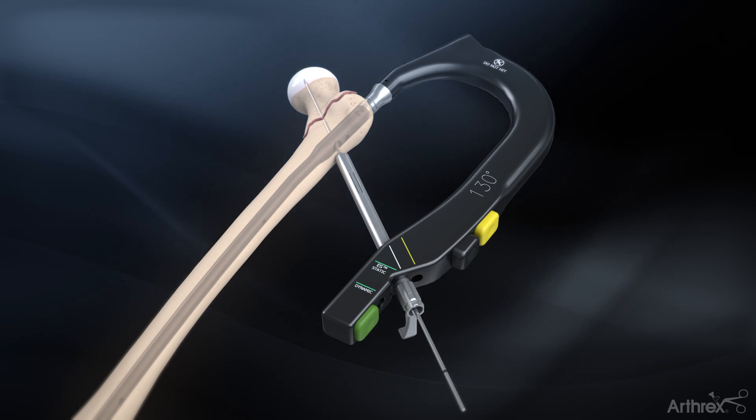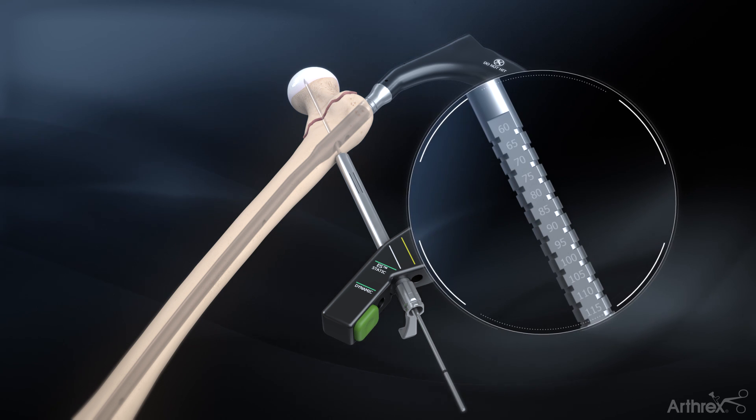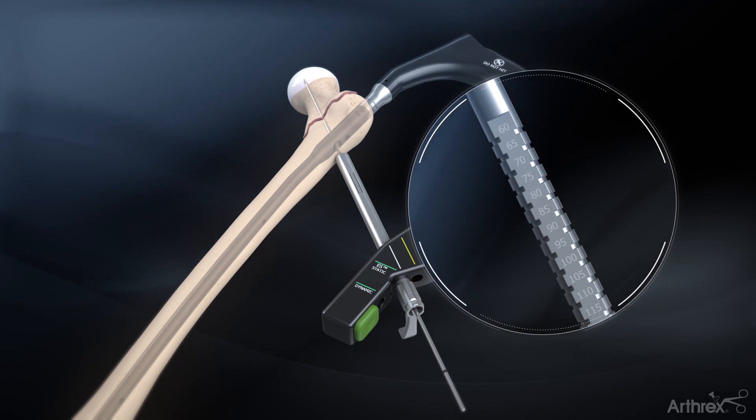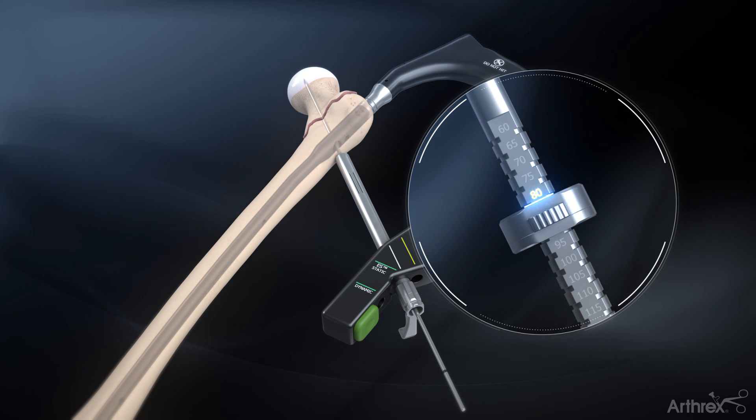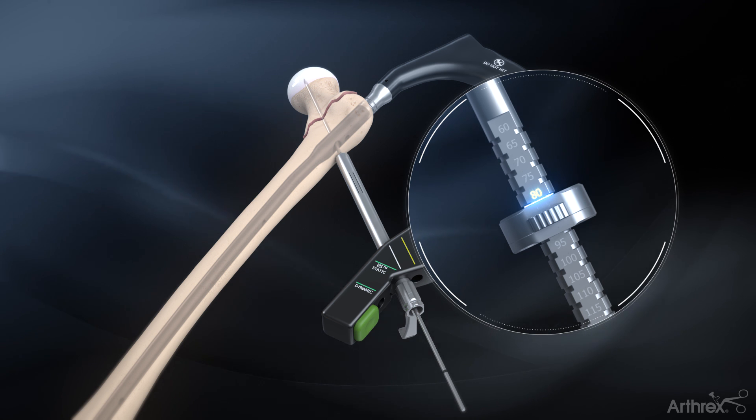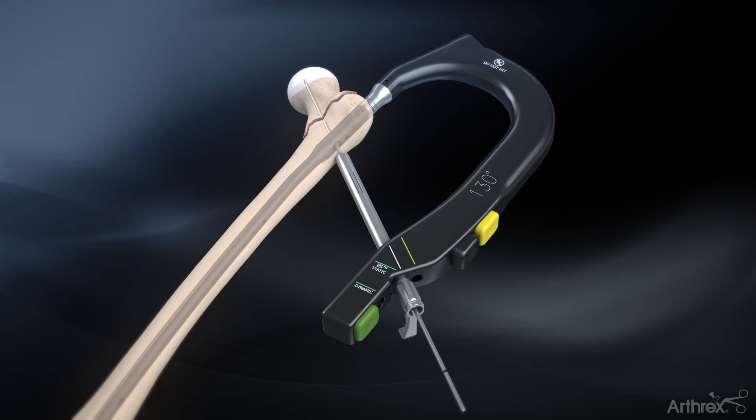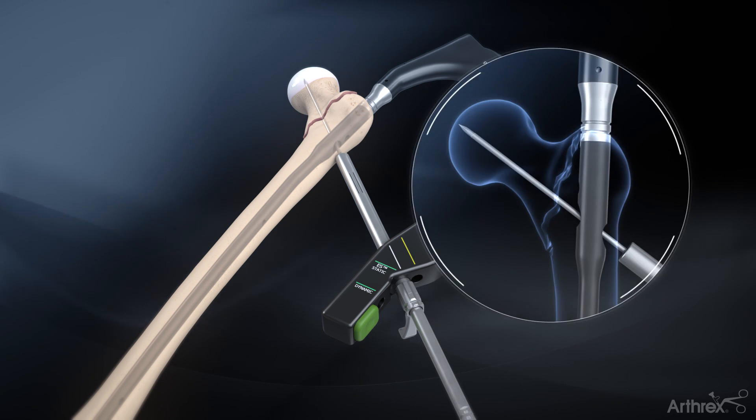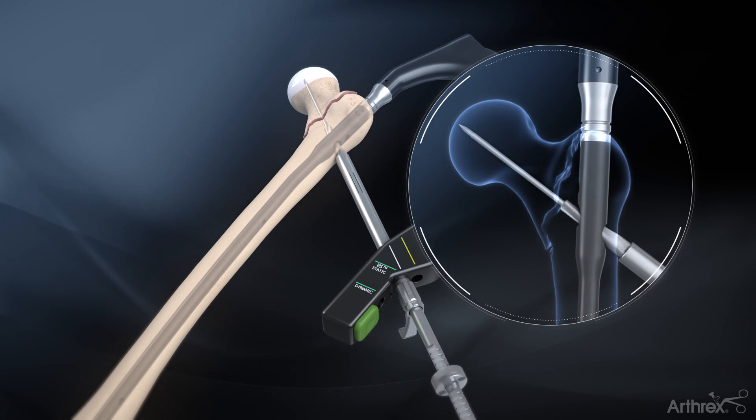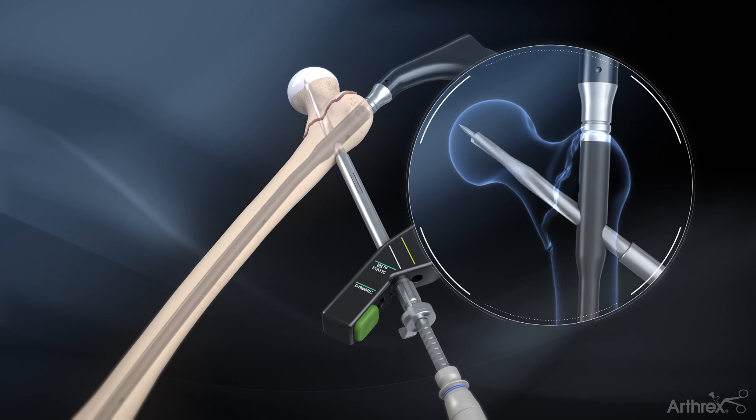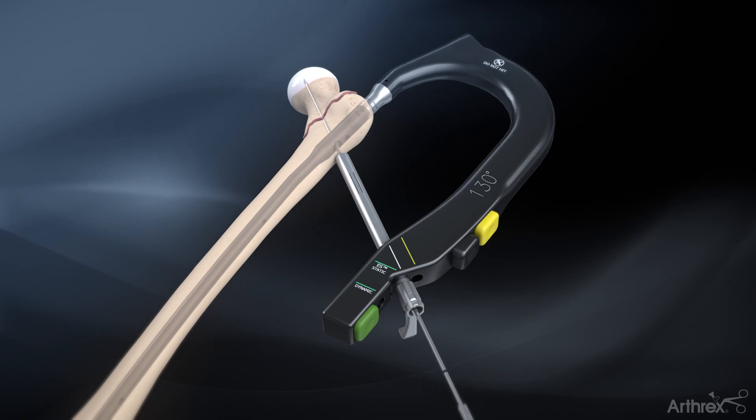Remove the 3.2 mm pin guide. Set the adjustable stop on the 10.3 mm cannulated lag screw drill at least 5 to 10 mm less than the measurement, so the tip of the drill does not pass beyond the guide pin. Insert the 10.3 mm cannulated lag screw drill over the guide pin and drill into the femoral head until the depth stop contacts the sleeve.